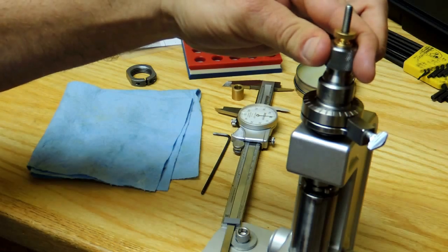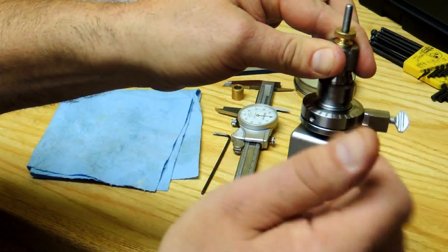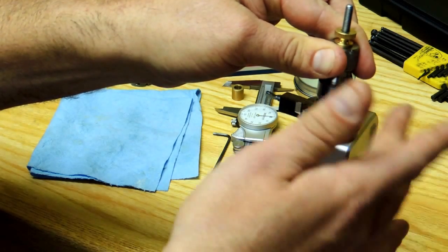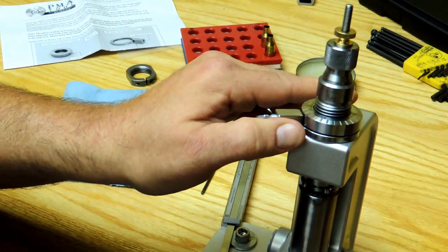At this point, back it out about an eighth of a turn and run the die adjuster down until it makes firm contact with the top of the press.